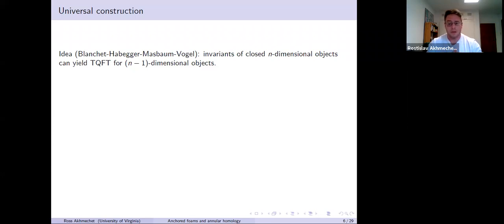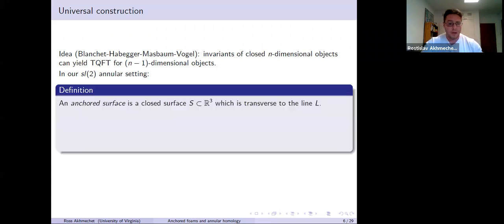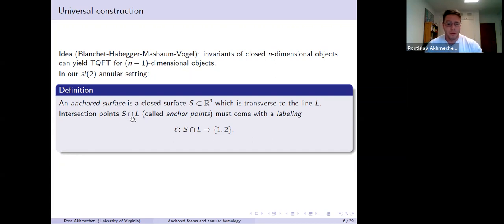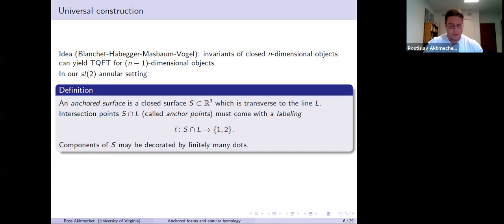In the SL2 annular setting, here are the closed objects we're interested in. An anchored surface is a closed surface transverse to the anchor line L — it can intersect it, but must do so transversely. It carries additional data: the intersection points of S with the line, called anchor points, each labeled either one or two. Moreover, components of S may carry some number of dots, which is familiar in link homology.